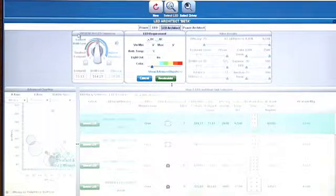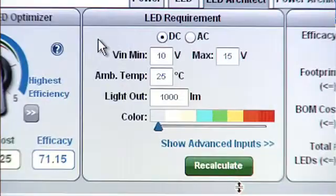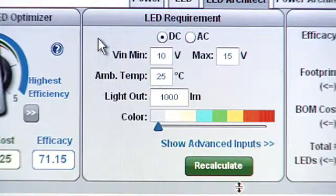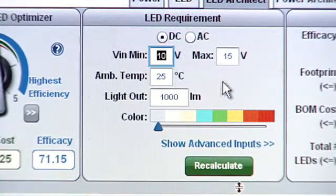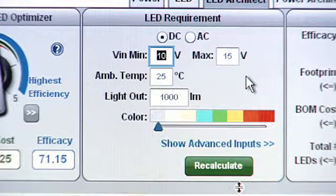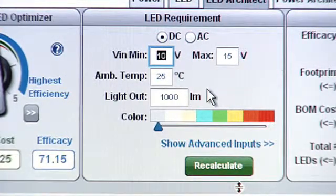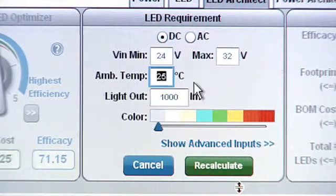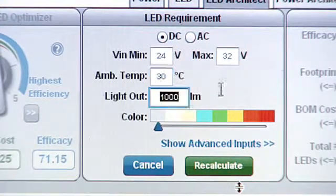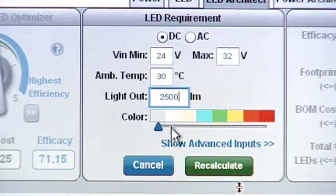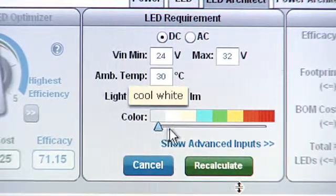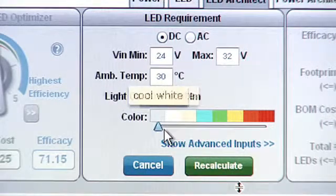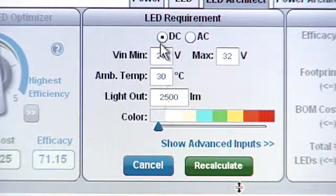Here's what you see as you first go into the tool. On the LED Requirements panel, there's a space where you enter your input voltage range, your ambient temperature, and most importantly, your desired light output. I will enter 24 to 32 for VIN and 30 degrees C for the ambient temperature, and also 2500 lumens for my desired light output. Below that, you see a slider that will allow you to change the color of the LEDs, and of course, the DC or AC input voltage switch.